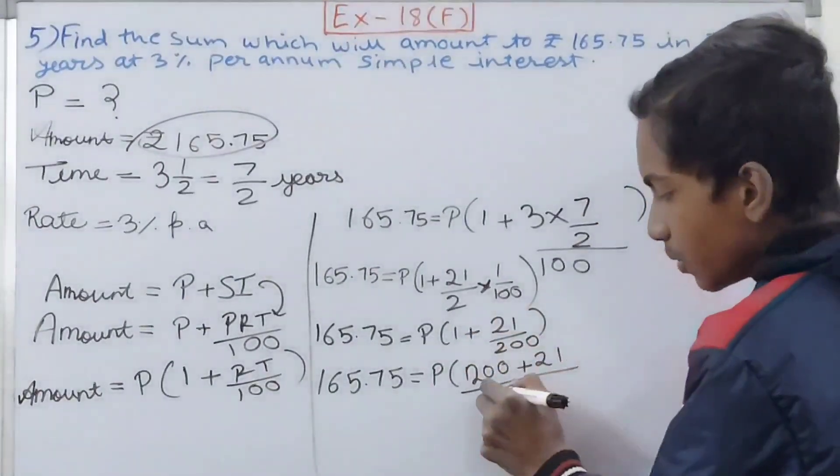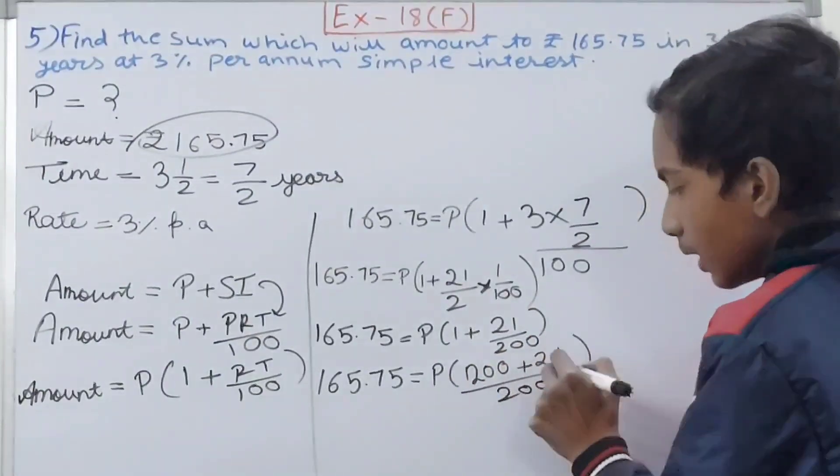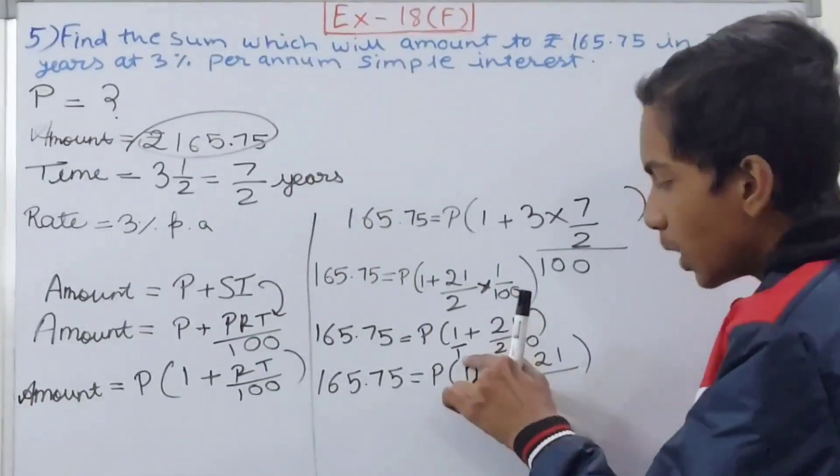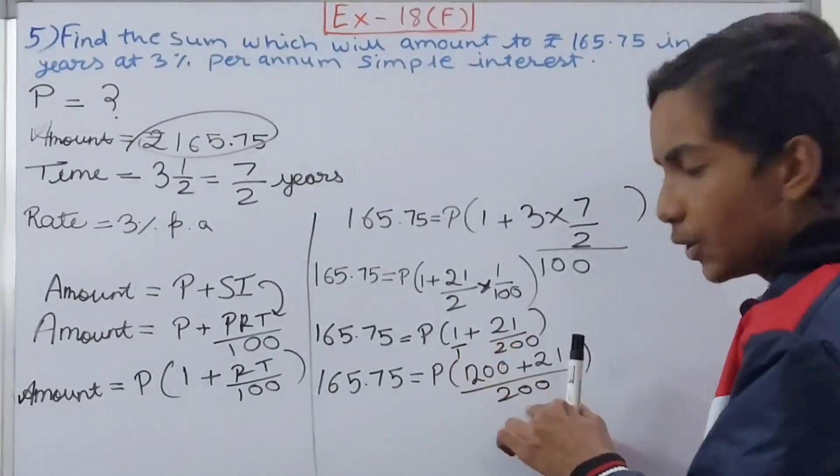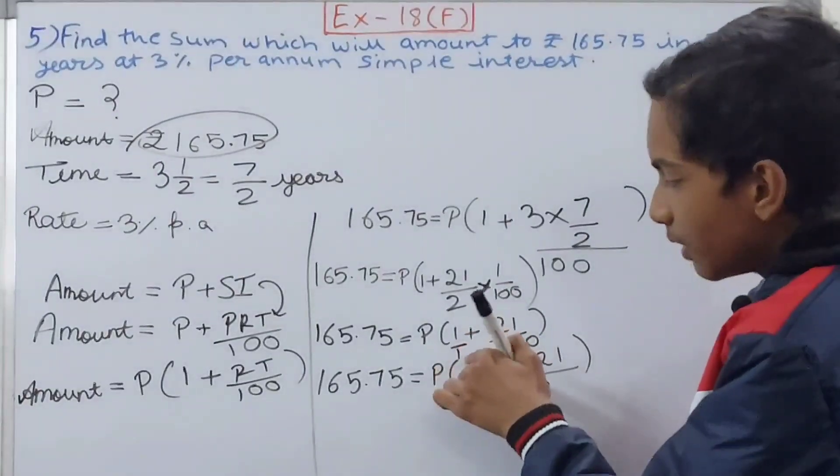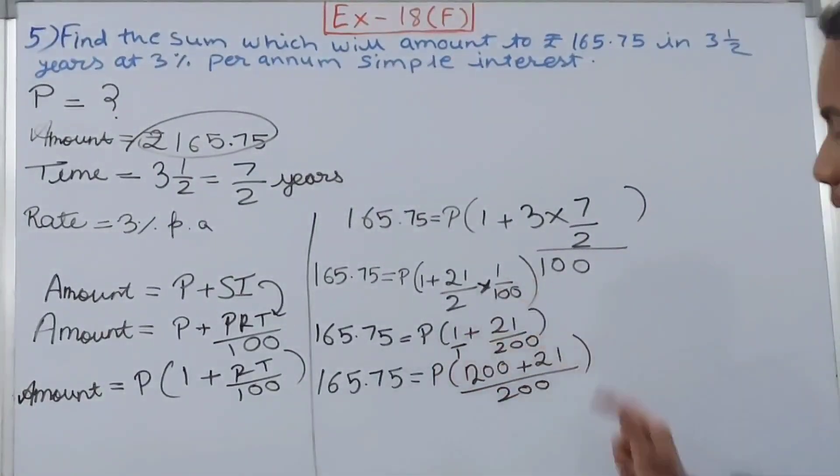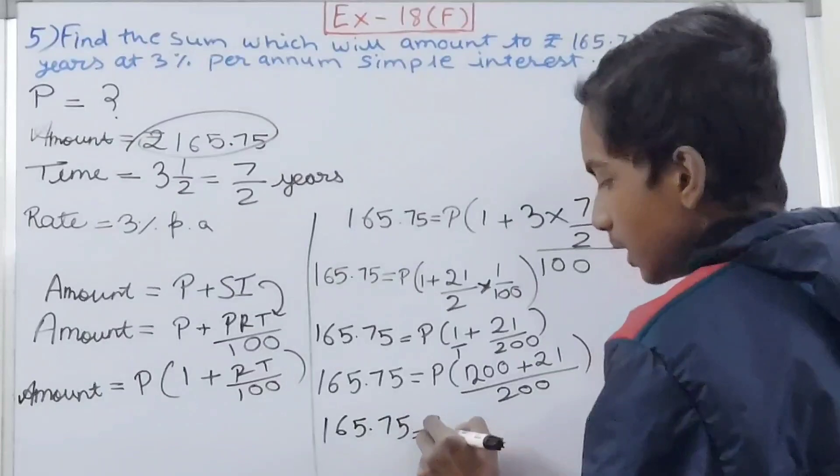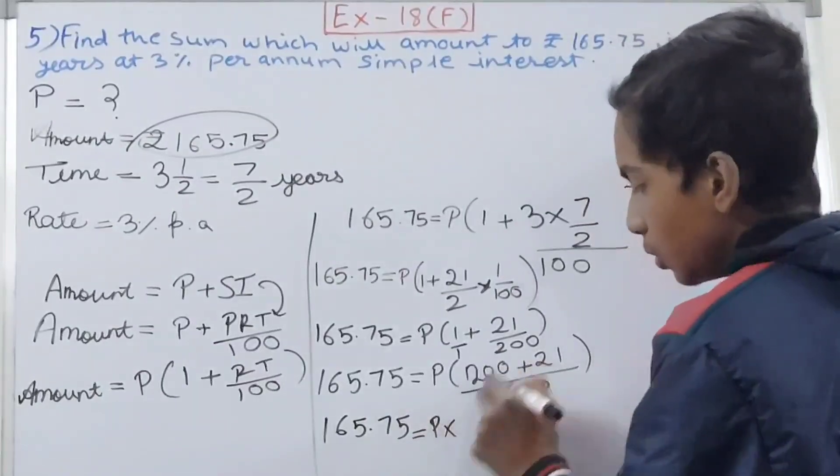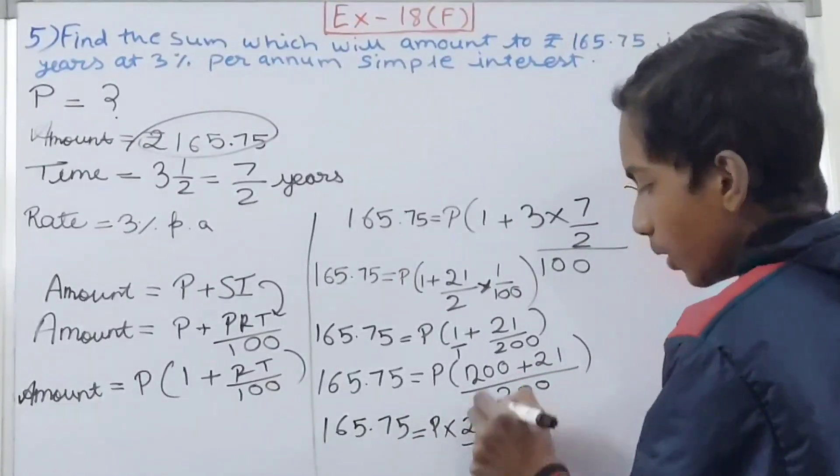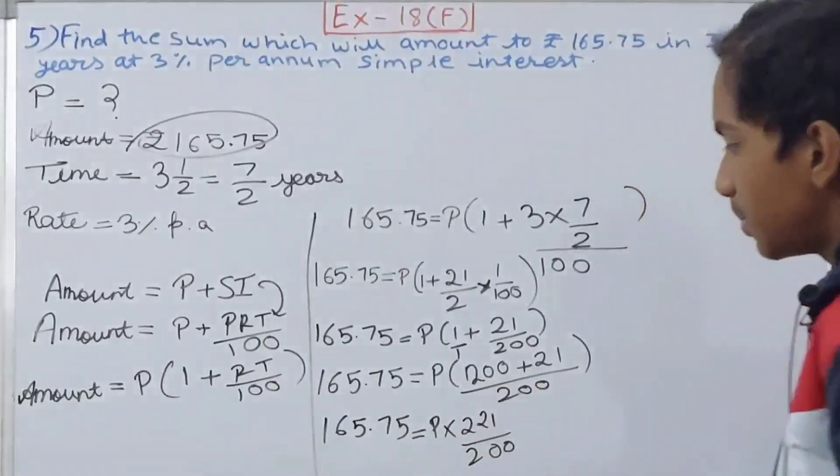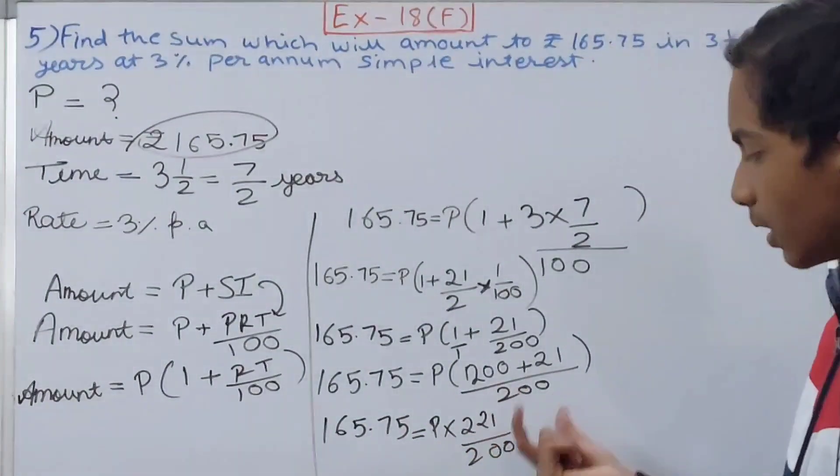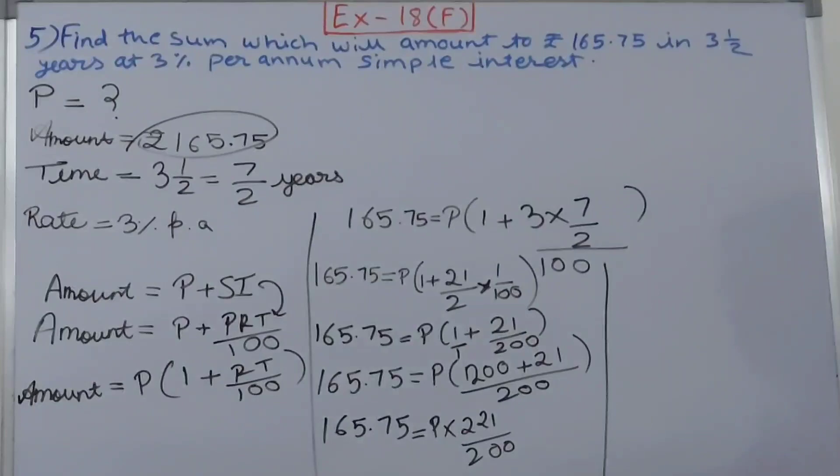Why 200? Because this 1 can be written as 1/1. So LCM of 1 and 200 will be 200. This one will multiply 200 times. So you get 165.75 equals P×(200+21)/200. This becomes 165.75 equals principle into 221/200.